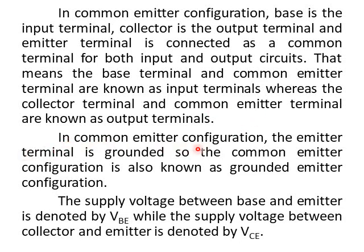In Common Emitter Configuration, the Emitter Terminal is grounded. The Common Emitter Terminal is also known as Grounded Emitter Configuration. The supply voltage between Base and Emitter is denoted by VBE, while the supply voltage between Collector and Emitter is denoted by VCE.